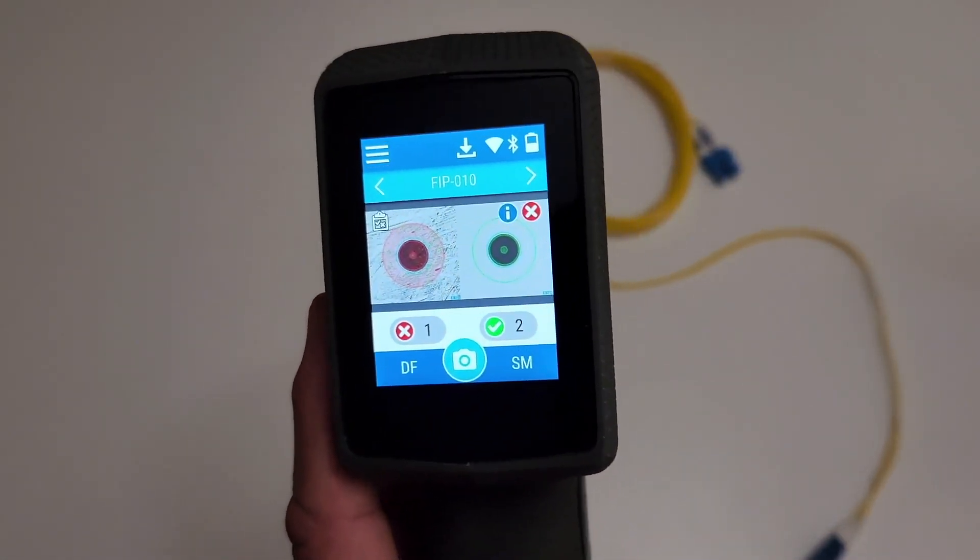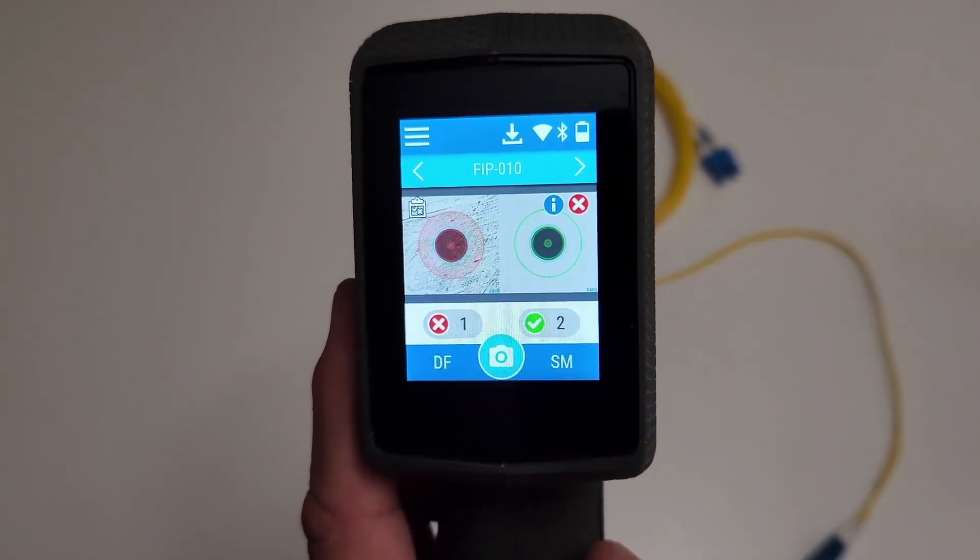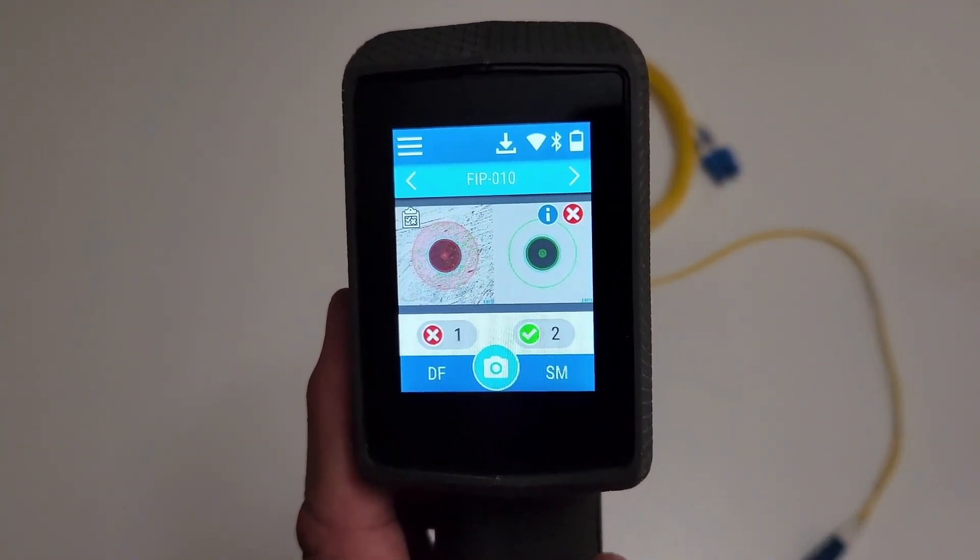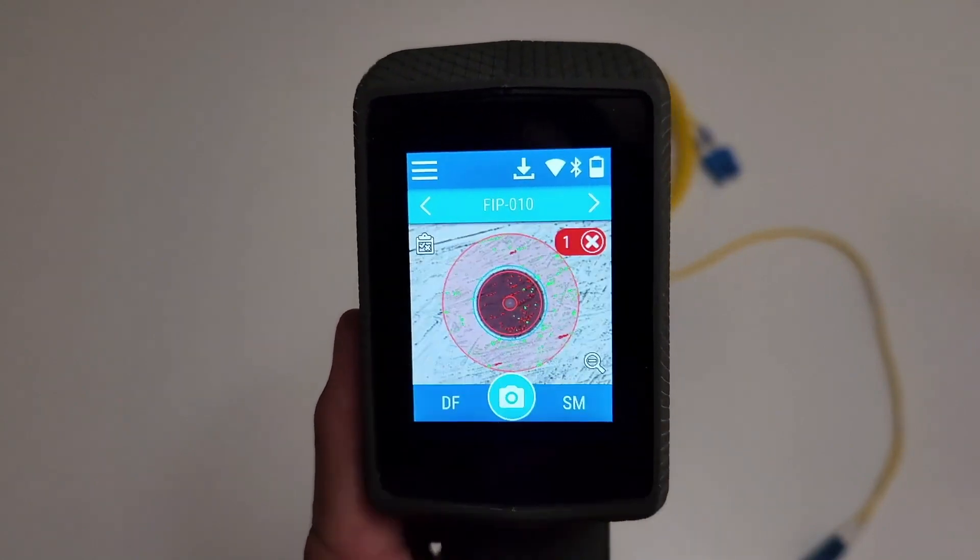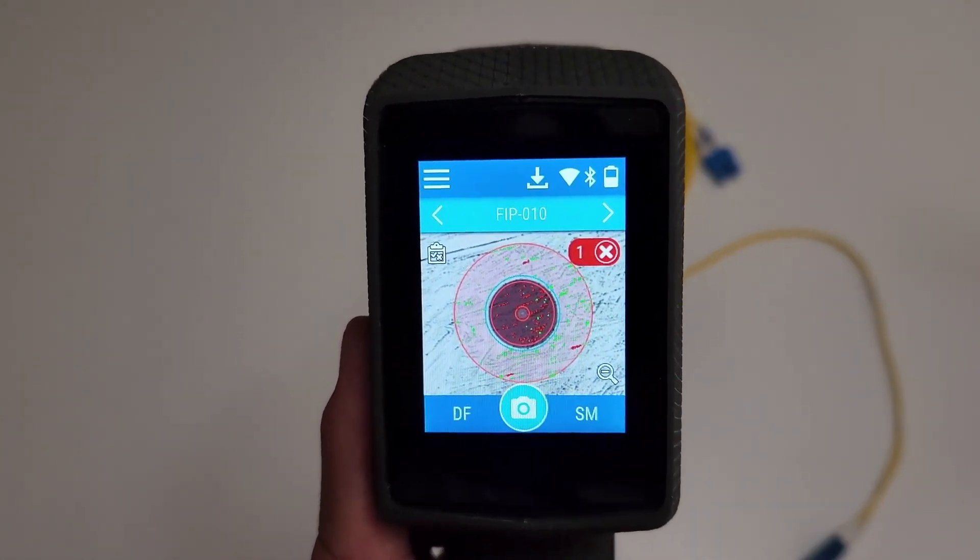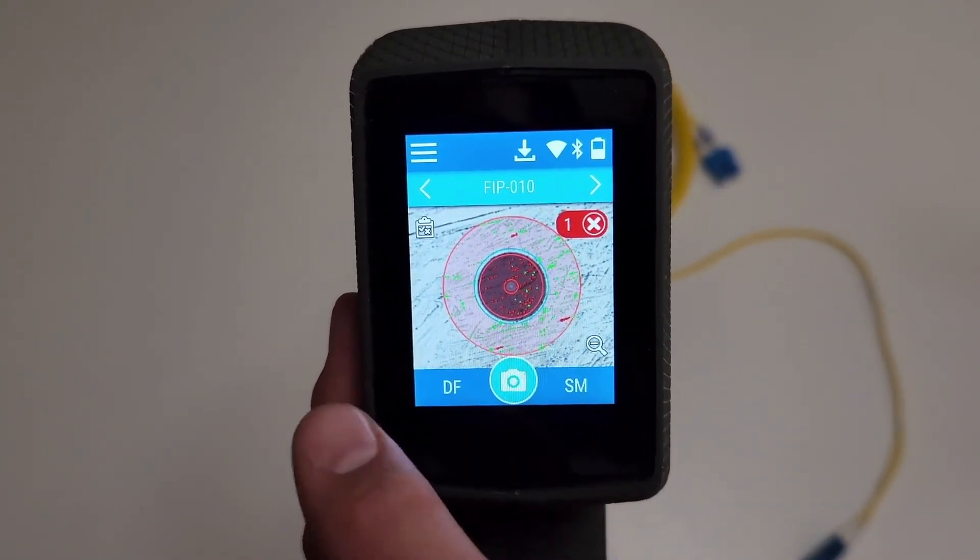This inspection capture shows two fibers on the screen, and to zoom on one, simply click on the desired fiber directly on the touch screen. Let's select Fiber 1 for further examination.